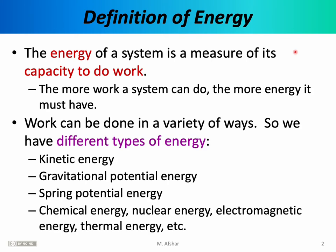Work can be done in a variety of ways using a variety of forces, so we have different types of energy. Each type of energy basically corresponds to a specific way that a specific force is used to perform work. There's kinetic energy, gravitational potential energy, spring potential energy, chemical energy, nuclear energy, electromagnetic energy, thermal energy, and infinitely many other types of energy.